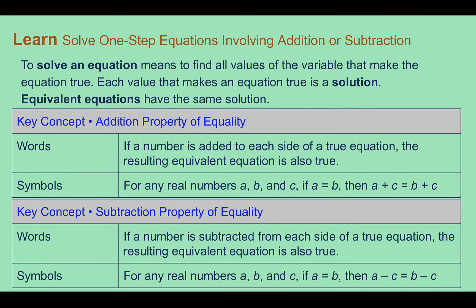Solve one-step equations involving addition or subtraction. To solve an equation means you are finding all the values of the variable that make the equation true. Each value that makes the equation true is called a solution. Equivalent equations, which we saw in one of the previous lessons, will have the same solution. In addition to all the properties we've learned so far, we have a couple new properties that will also help us find these solutions.